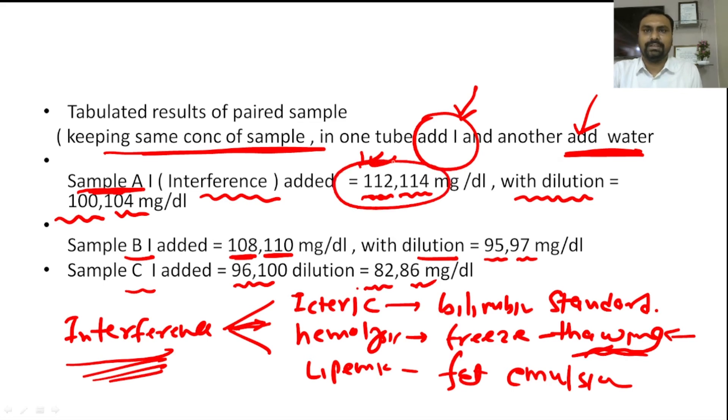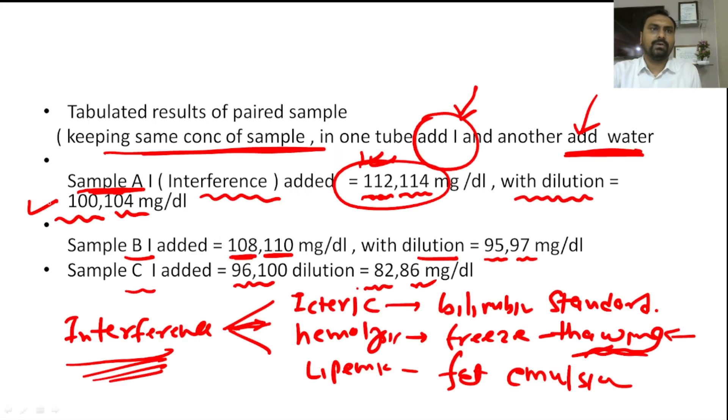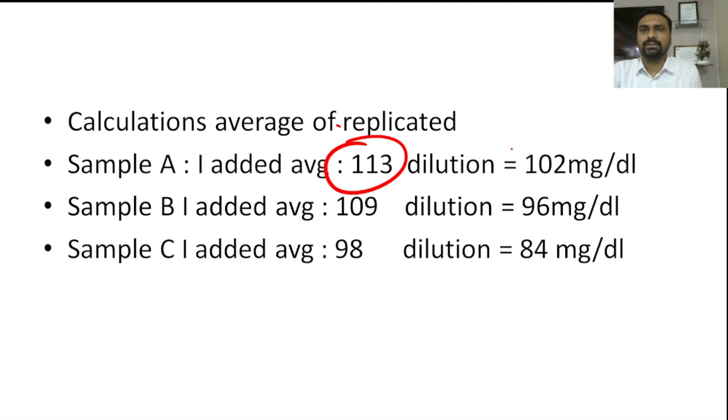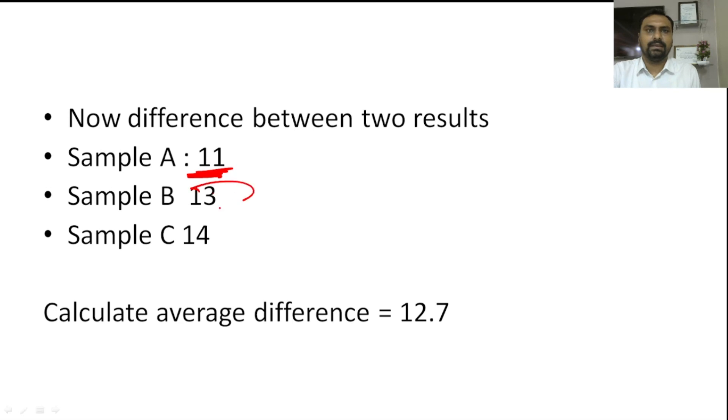Now we have to average this. So 112 and 114, the average will be 113. And for the dilution, we got result 100 and 104, so the average will be 102. We have to deduct this 102 from 113. Same way, we get the average 109, 96, 98, and 84 for sample B and sample C respectively. If we take the difference between these two, for sample A we get the result difference is 11. For sample B, the difference is 13. And for sample C, the result is 14. We calculate the average difference that is 12.7.